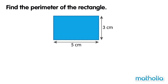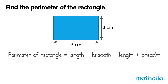Find the perimeter of the rectangle. The perimeter is equal to the length plus breadth plus length plus breadth. The length of this rectangle is 5 cm and the breadth is 3 cm.